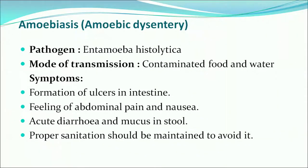Next is amoebiasis, also called amoebic dysentery. The pathogen is Entamoeba histolytica. Mode of transmission is through contaminated food and water. Symptoms include formation of ulcers in the intestine, abdominal pain and nausea, acute diarrhea and mucus in stool. Proper sanitation should be maintained to avoid it.